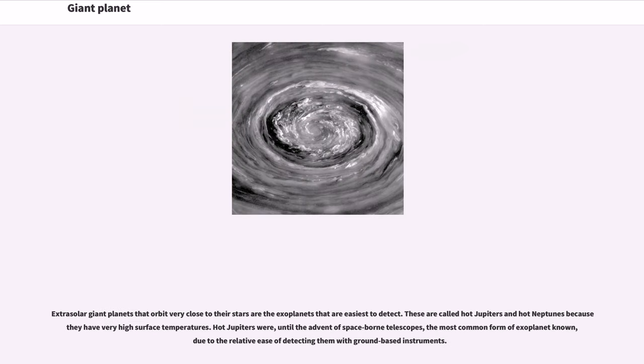Extrasolar giant planets that orbit very close to their stars are the exoplanets that are easiest to detect. These are called hot Jupiters and hot Neptunes because they have very high surface temperatures. Hot Jupiters were, until the advent of space-borne telescopes, the most common form of exoplanet known, due to the relative ease of detecting them with ground-based instruments.